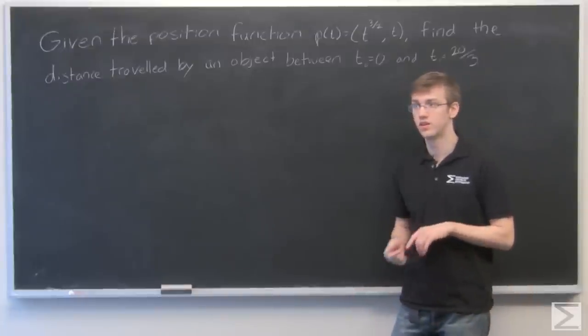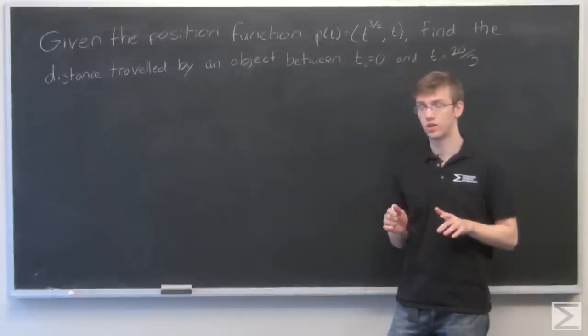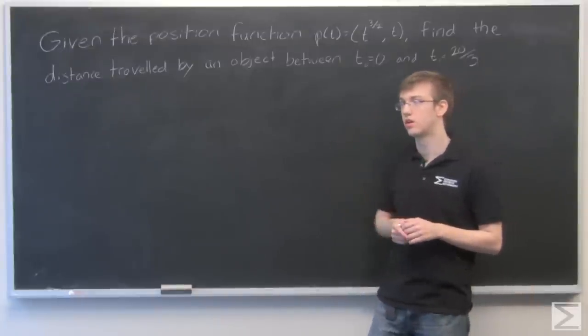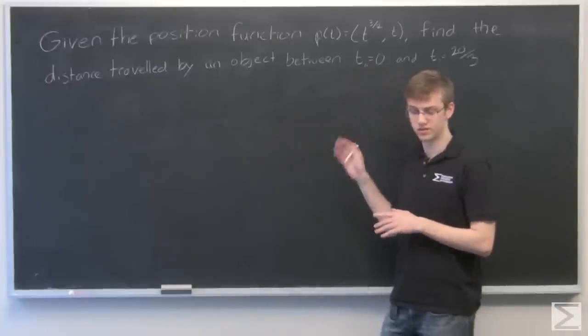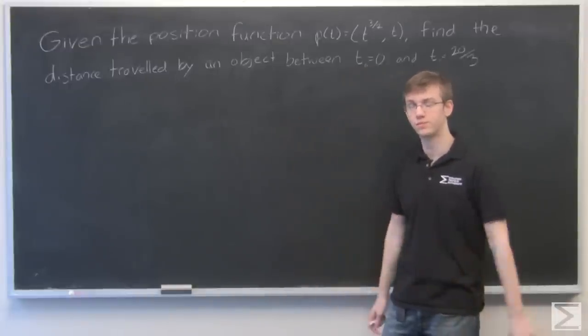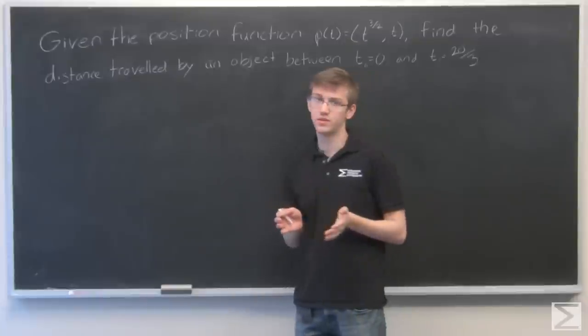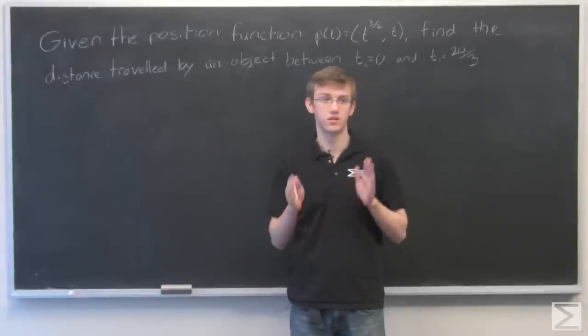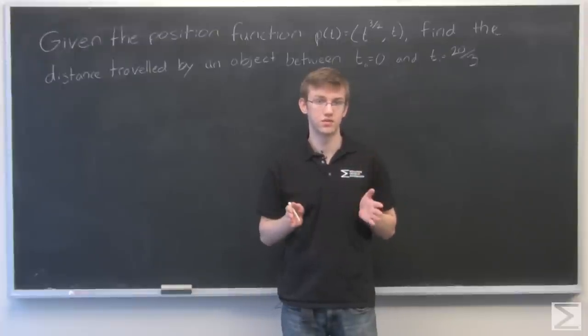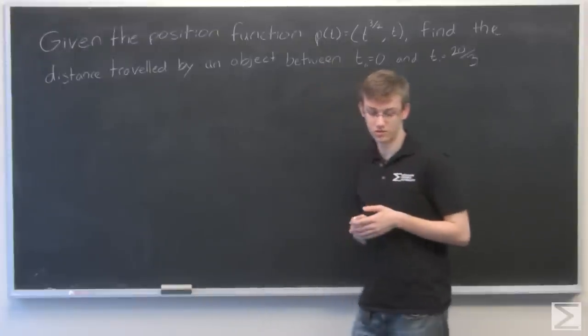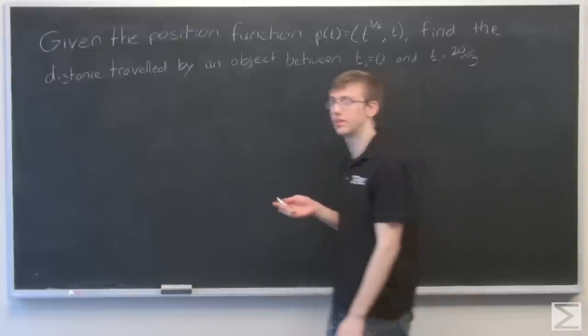To find the distance traveled, we have to take the integral of the speed of the object, which we get from the position function. Speed is the magnitude of velocity, and velocity is the derivative of position. So we're going to start by taking the derivative of this position function.